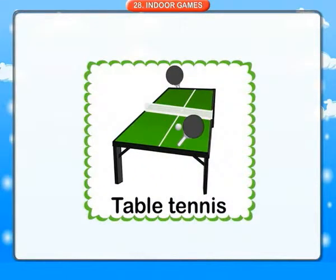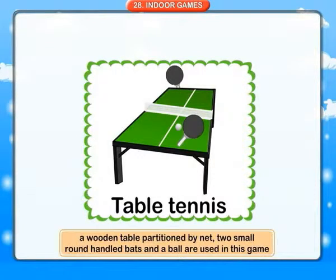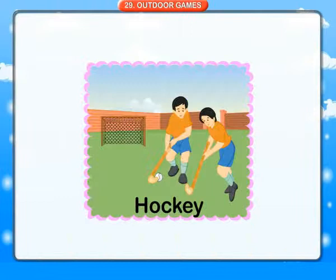Playing cards: 52 plastic-coated cards used in the game. Chess: made of cardboard having 64 white and black squares on it, with white and black plastic or wooden pieces used in the game. Carom: made of a wooden square with four side holes covered with a net. Snakes and ladders: made of cardboard with snakes and ladders printed on it. Table tennis: a wooden table partitioned by a net, with two small round-handled bats, used in this game.